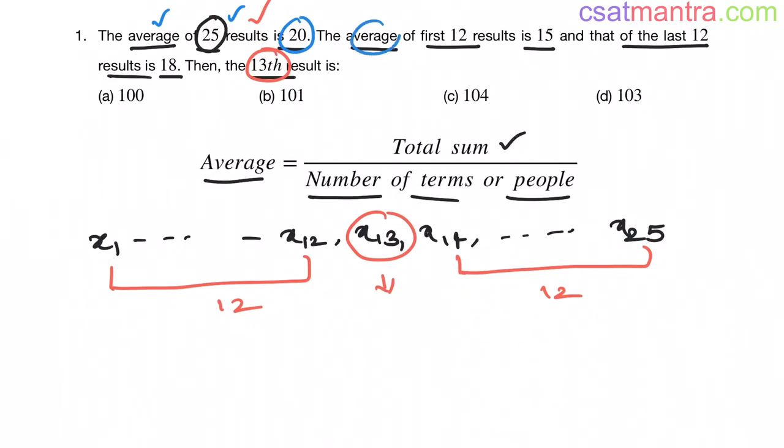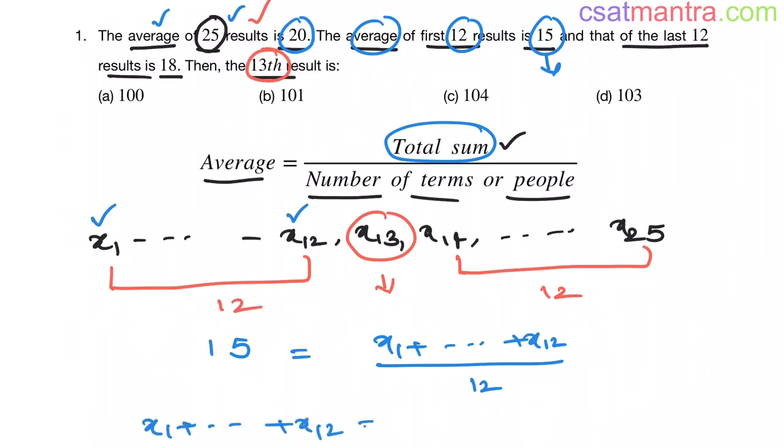Now, average of first 12 results is 15. First 12 results are x1 to x12. So average is 15. So 15 equals total sum that is x1 up to x12 by number of terms, 12. So this is x1 up to x12. So 12 times 15. 12 times 15 are, 12 times 10 are 150, 15 times 2 are 30. So 150 plus 30 is 180.